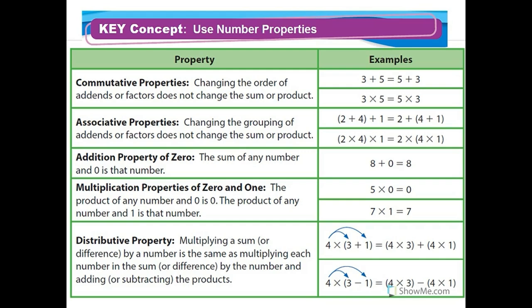For example, three plus five and five plus three both equal eight — their positions changed but the sum is the same. And three times five and five times three are both 15. So the commutative property says that changing positions doesn't change the sum or product.